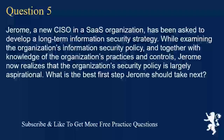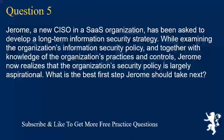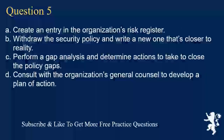Question 5. Jerome, a new CISO in a SaaS organization, has been asked to develop a long-term information security strategy. While examining the organization's information security policy, and together with knowledge of the organization's practices and controls, Jerome now realizes that the organization's security policy is largely aspirational. What is the best first step Jerome should take next? A. Create an entry in the organization's risk register. B. Withdraw the security policy and write a new one that's closer to reality. C. Perform a gap analysis and determine actions to take to close the policy gaps. D. Consult with the organization's general counsel to develop a plan of action.